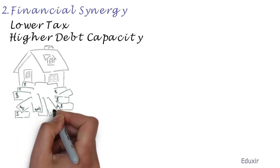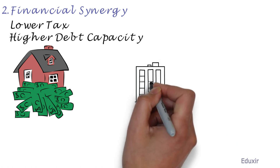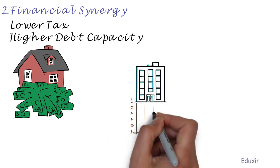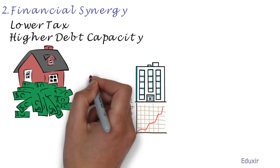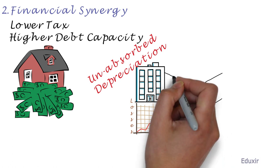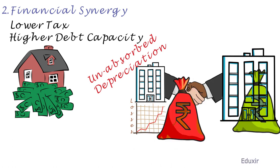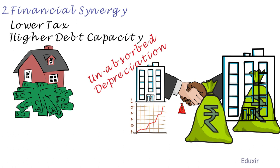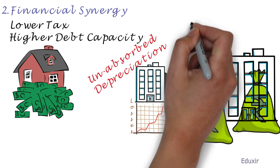Better use of surplus cash. When a firm is running in a loss or it has an unabsorbed depreciation, it can benefit by merging into a profitable firm. The merger can overcome the losses through its profits. This results in a financial synergy known as tax shield.